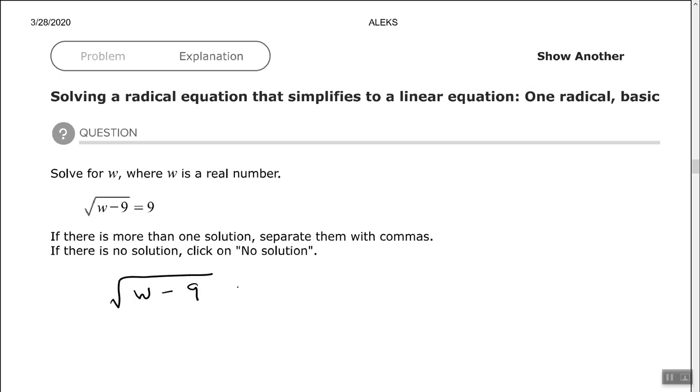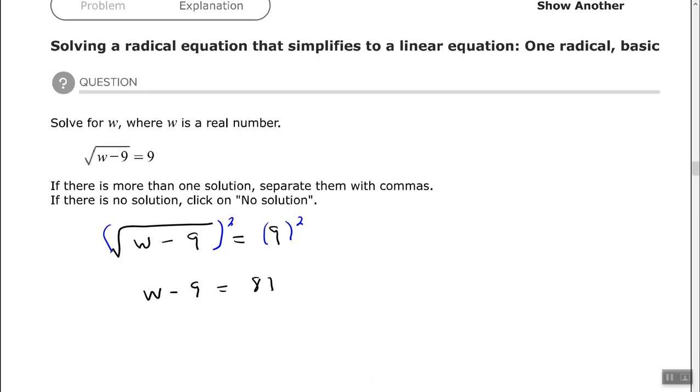So the first step is to make sure the radical is isolated, which it is. Now we want to clear the radical by squaring both sides. So the exponent and the radical clears out. That gives me w minus 9 on the left-hand side equals 81. And then we just want to solve the equation. So let's add 9 to each side. So w equals 90.